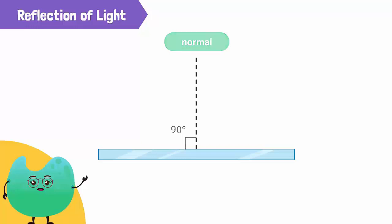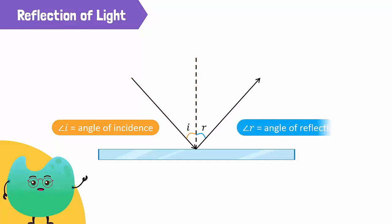The angle that the incident ray makes with the normal line is called the angle of incidence. It is represented by the letter small i and can be measured from the normal line. The angle between the reflected ray and the normal is called the angle of reflection, represented by the letter small r.